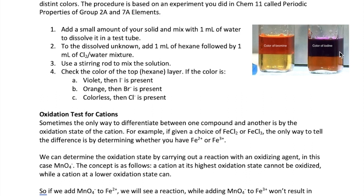As shown in this picture, if the color is violet, that means iodine is present in the hexane layer, which means iodide is originally the ion that you have in the compound. If the top layer is orange, then bromine is present, and bromide is the ion that you originally have in the compound. If the top layer is colorless, then the original anion is chloride.